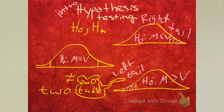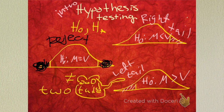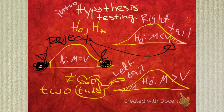And we get to reject that null if our test stat or p-value lie in these regions. Reject. Reject. Reject. And this one's reject if it lies bigger than that value.